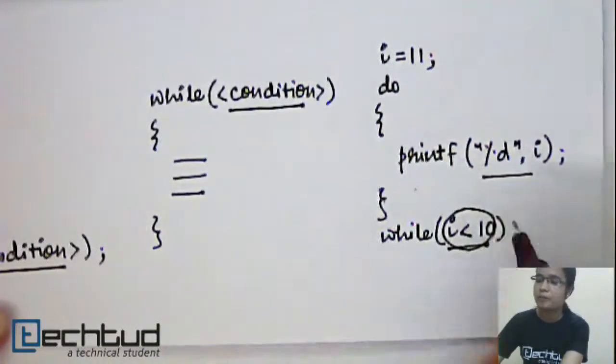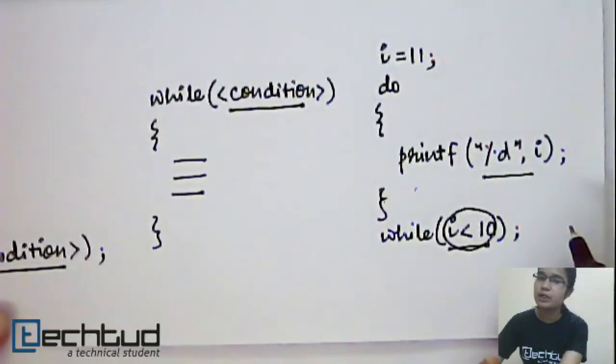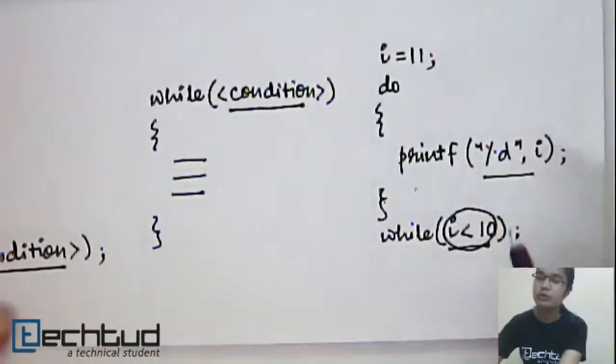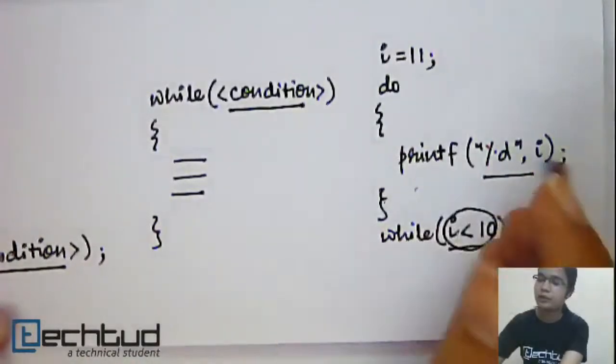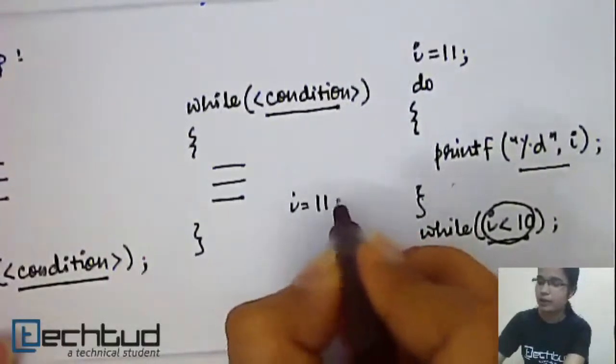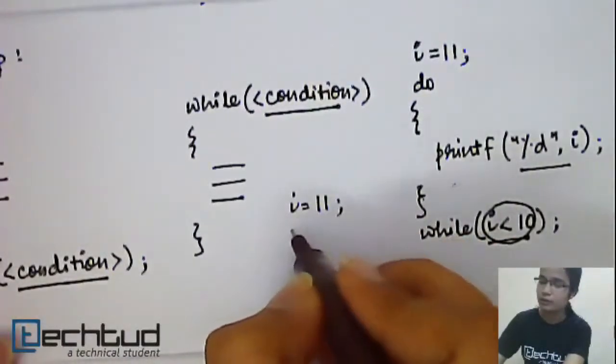So what happened is that whatever condition you have written, the do-while loop will always be executed once. The first iteration will be executed without checking for any condition.